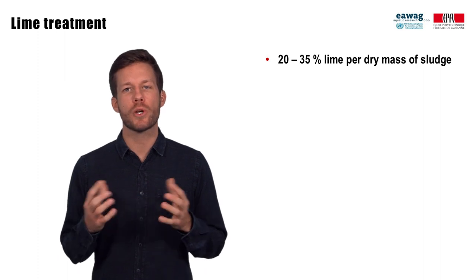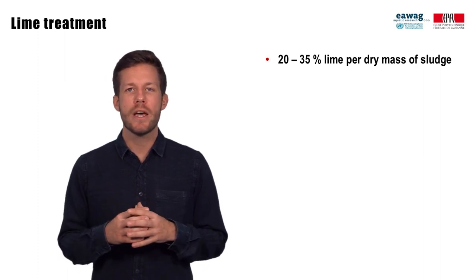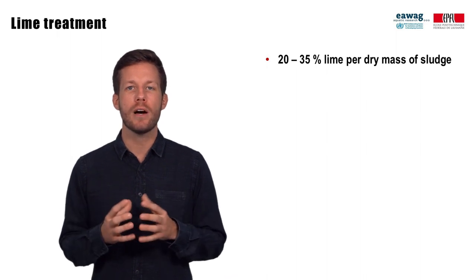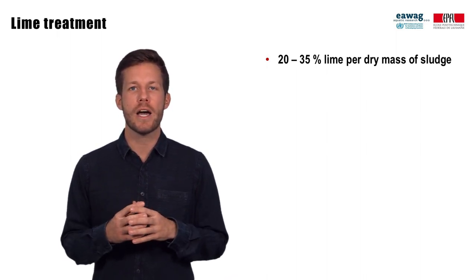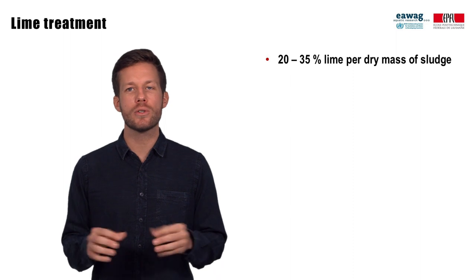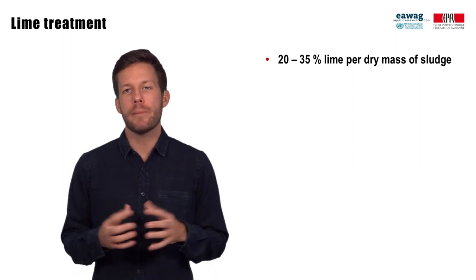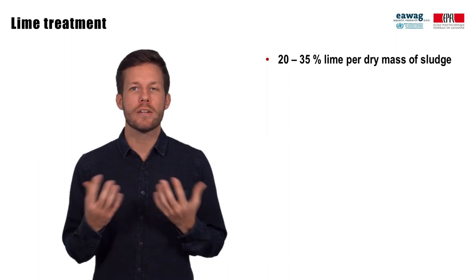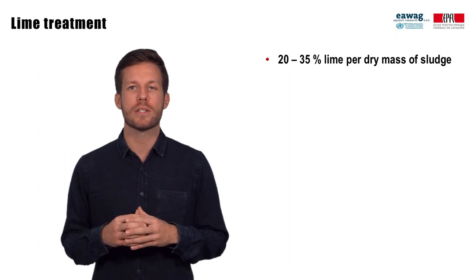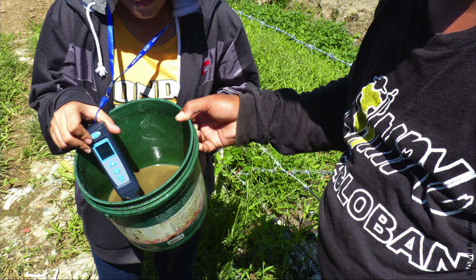The dosage of lime to adequately raise the pH is an important design and operational parameter for lime treatment. The average dosage from several lime treatment applications in the United States with septic tank sludge and in the Philippines was 20% lime per dry mass of sludge. In one study in Blantyre, Malawi, addition of 20% to 35% lime per dry mass of sludge successfully increased the pH to 12. As the total solids content and chemical characteristics of sludge can vary, it is always important to determine the required dosage based on local sludge characteristics. This can be done by simple bench and pilot scale experiments where different amounts of lime are added to fecal sludge, and pH is monitored over time with a handheld pH meter.